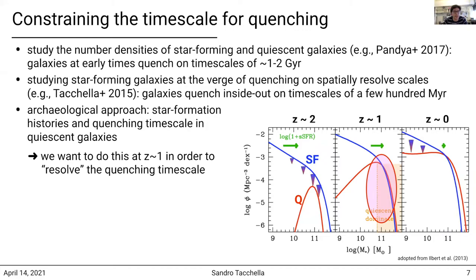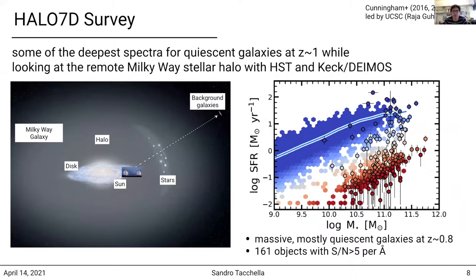We have been doing this as part of the HALO 7D survey. The HALO 7D survey provides very deep spectra for quiescent galaxies around redshift 1. The main purpose of the survey is looking at the Milky Way halo, but we have been using the same observations to track the background galaxies that lie in the CANDELS fields, which ensures that we have multi-wavelength data for these objects. On the right, you can see that we have roughly 160 galaxies, in particular at high masses, both star-forming and quiescent, around redshift of about 1.